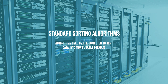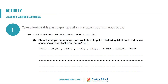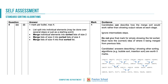Those are the three sorting algorithms we need to know for the OCR exam. Let's look at past exam questions. For example: 'The library sorts their books based on a book code. Show the steps that a merge sort would take to put the following books in order.' That's a four mark question with a full A4 page to answer. The mark scheme shows you should earn one mark for splitting into individual elements, one mark for sorting into pairs, one mark for sorting into fours, and one mark for the final sorted list.